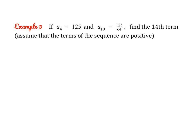Now we are going to work with a scenario where we don't know a sub 1 and we don't know r, but we are given two values, so we can find both by setting up a system of equations. When we're told something like this, it's saying that when n equals 4, a sub n is 125. We're going to use our base formula. We can say 125 equals a sub 1 times r to the power of 4 minus 1, which simplifies quickly.